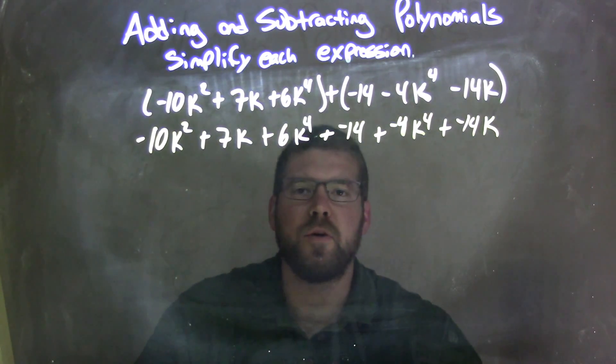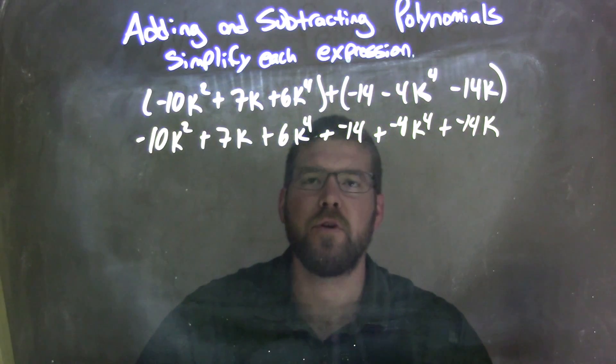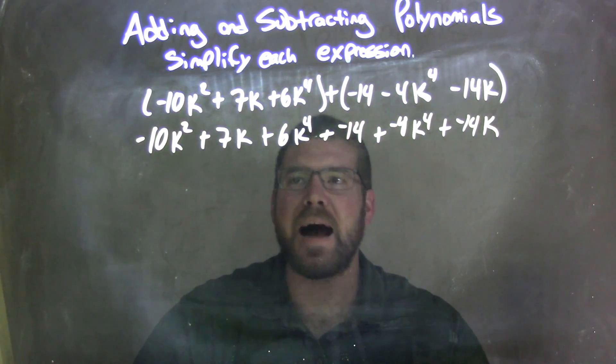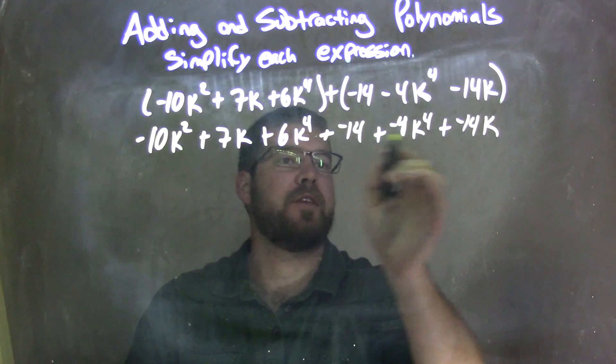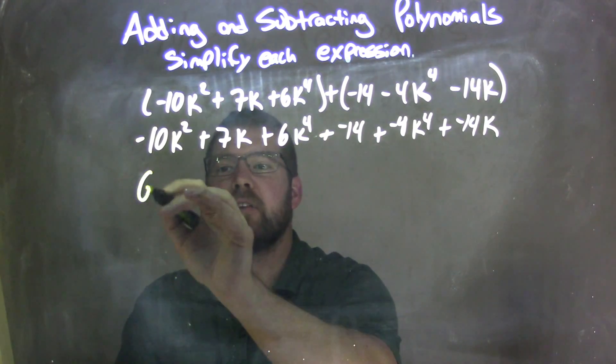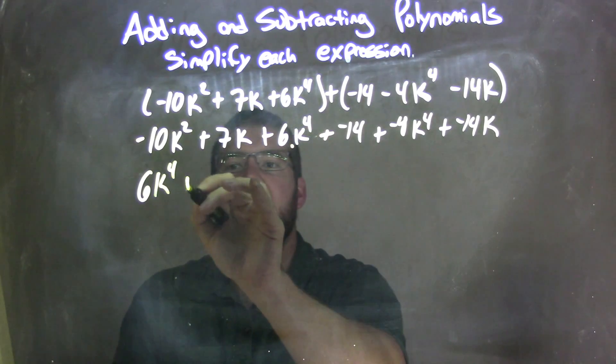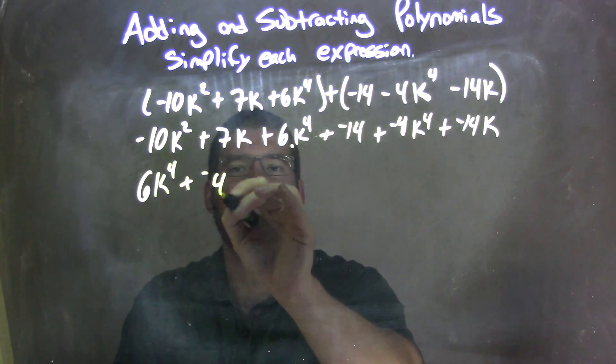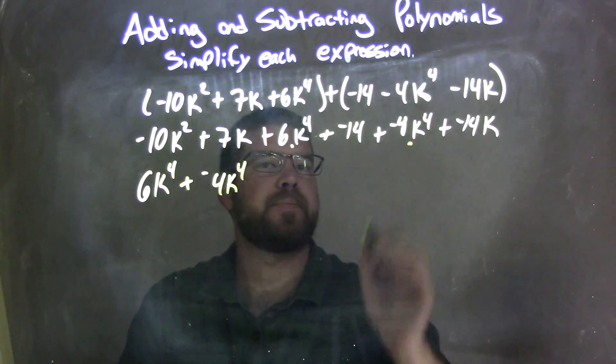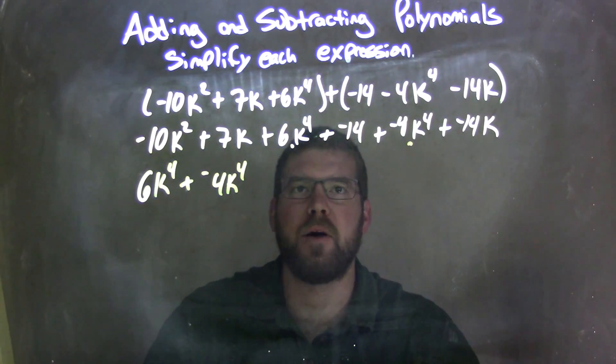So now what I want to do is rewrite this using the commutative property and combine my like terms and put my highest degree first. Highest degree I see is to the fourth power. So 6k to the fourth, add a negative 4k to the fourth right there, and I don't see anything else to the fourth power.